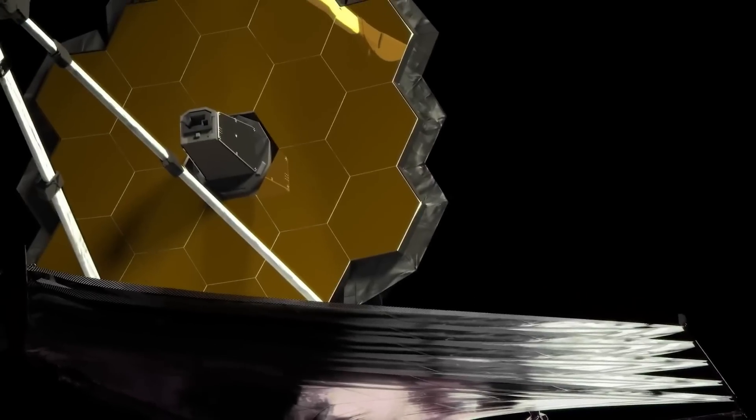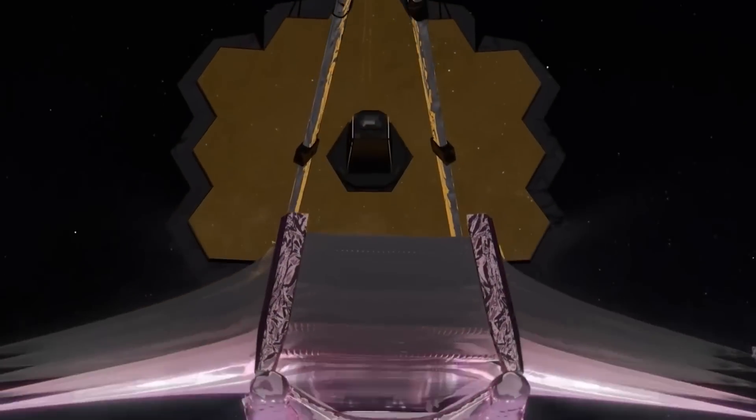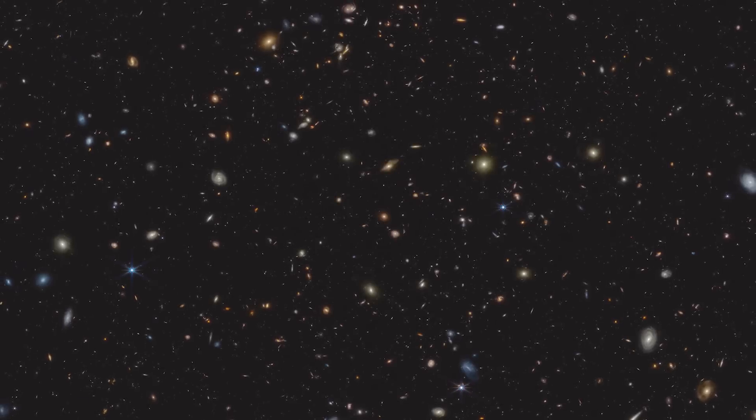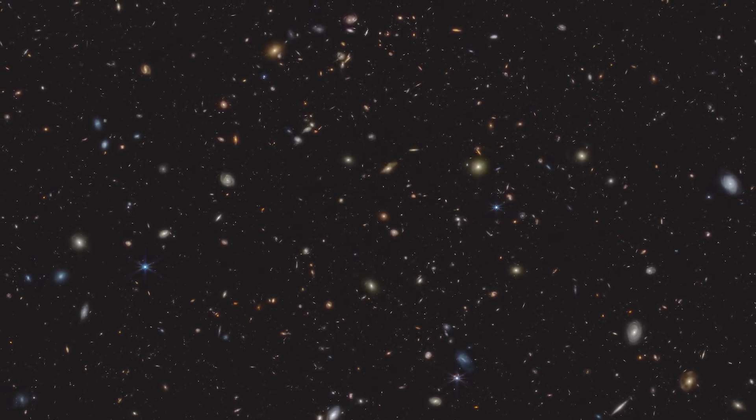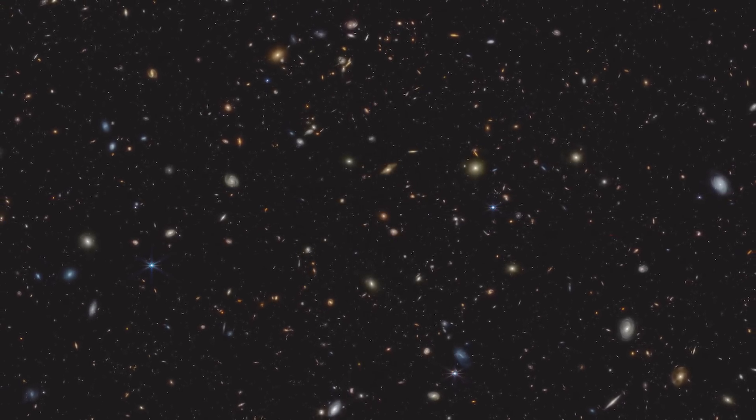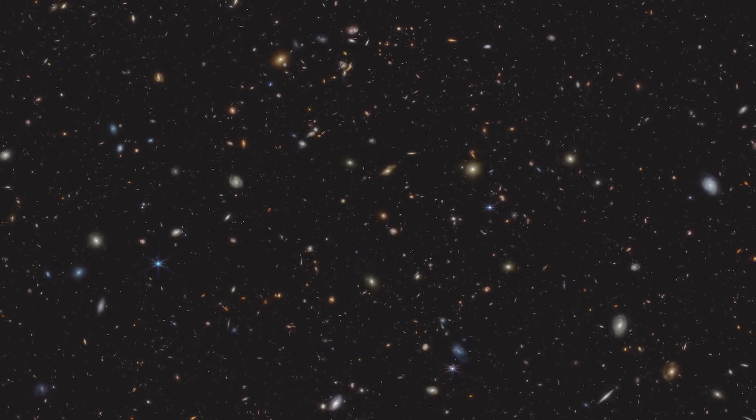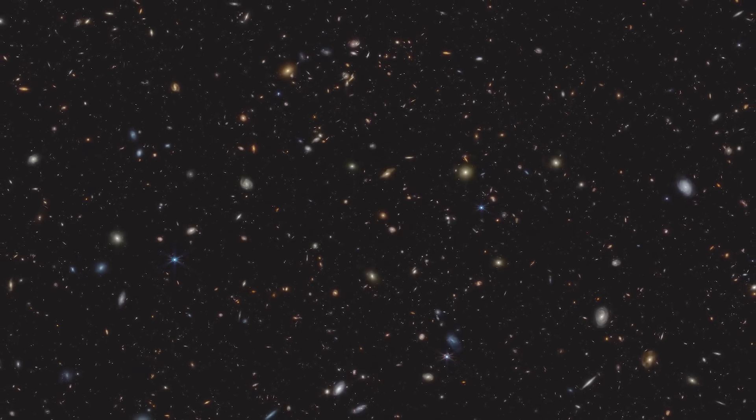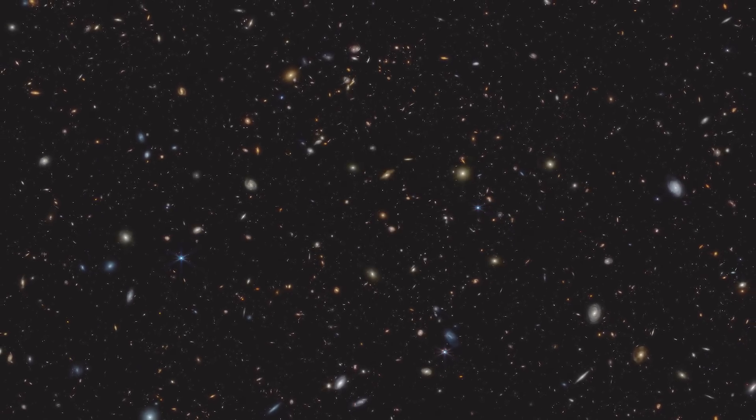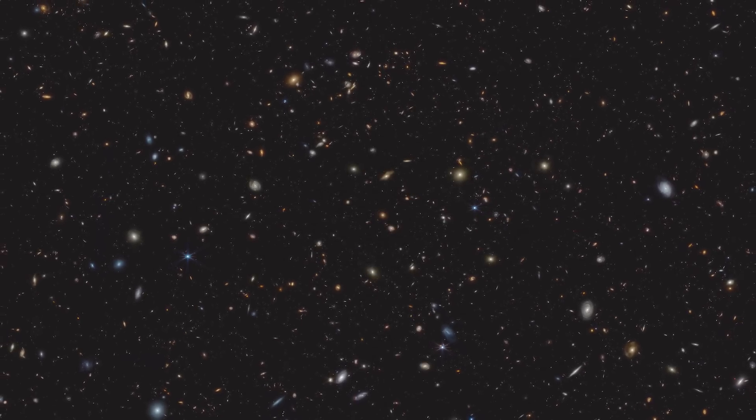Initially, results from the James Webb Space Telescope seem to imply that large, bright galaxies developed before the alleged Big Bang. If proven, this would radically challenge current cosmological beliefs. Many of these galaxies appear to be more massive than the traditional cosmological model, which defies the composition and development of the universe.